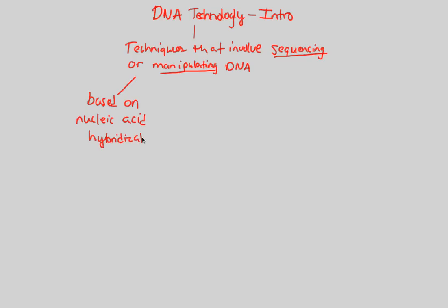In terms of the word hybridization, we know that hybrid is a mix of two different things — we've seen that before with hybrid crosses, monohybrid and dihybrid. Basically, nucleic acid hybridization is stating that DNA technology is based on the idea of base pairing, which we'll label as BP-ING.